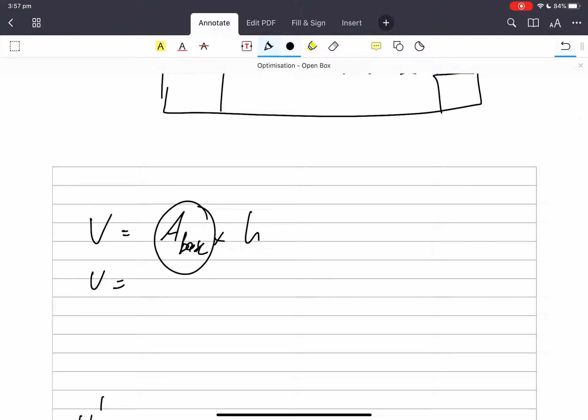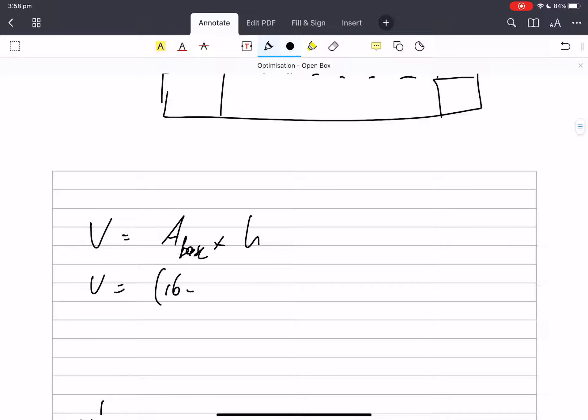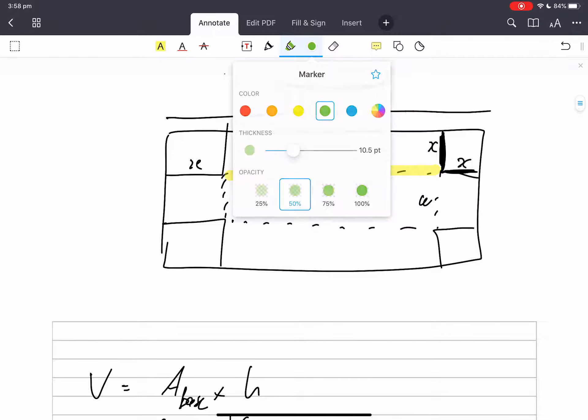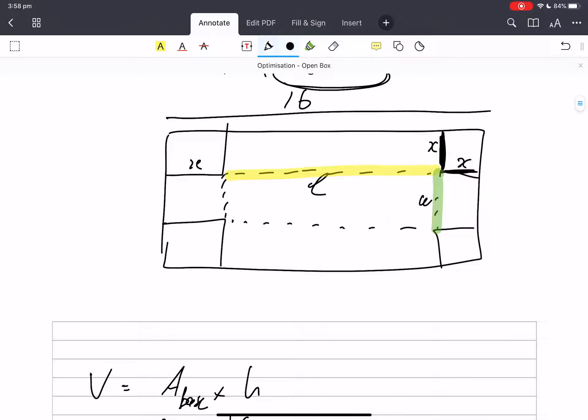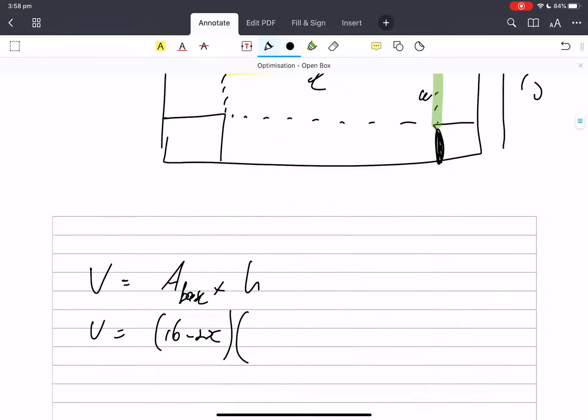Volume is the area of the base, which is length times width. This length will be—that was 16, and that's x and that's x—so it's 16 minus 2x. The width will be, how wide was it? 10. If that's 10 and I've come in x, there's two x's, so it's going to be 10 minus 2x.